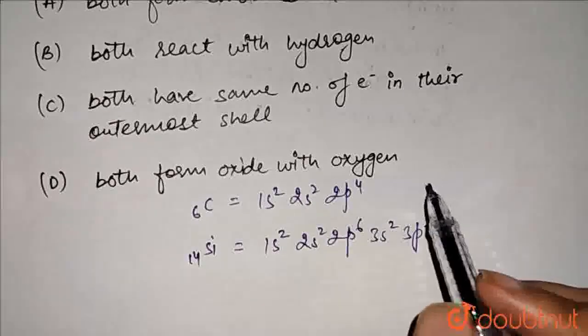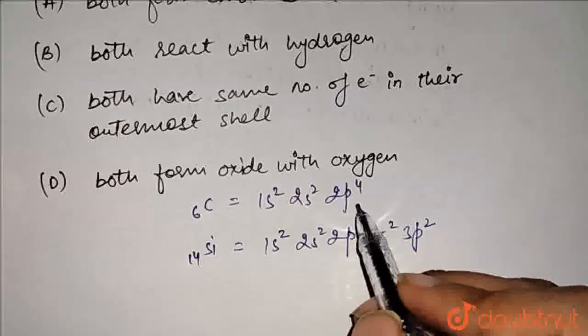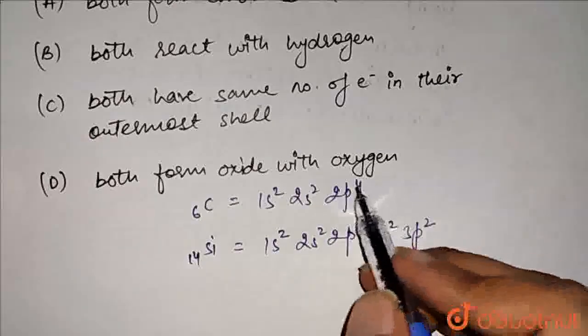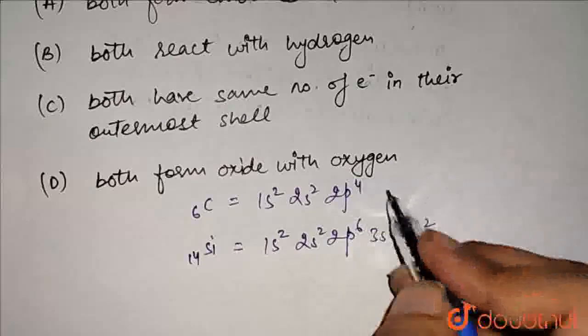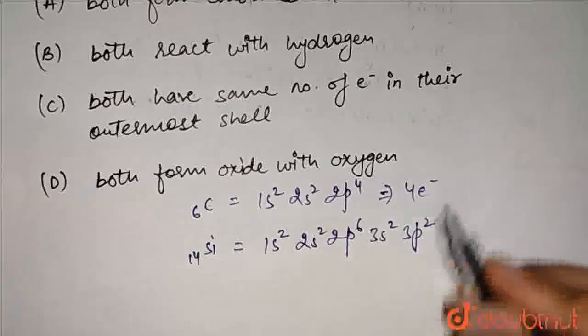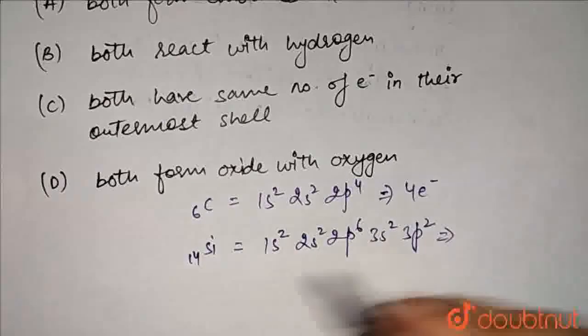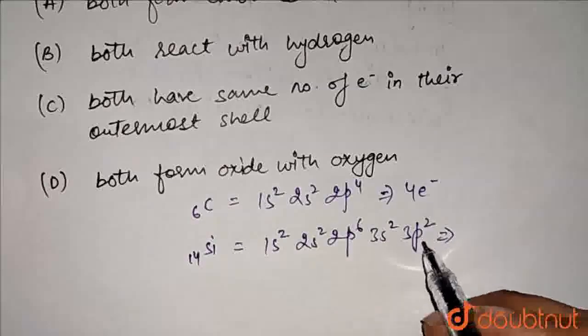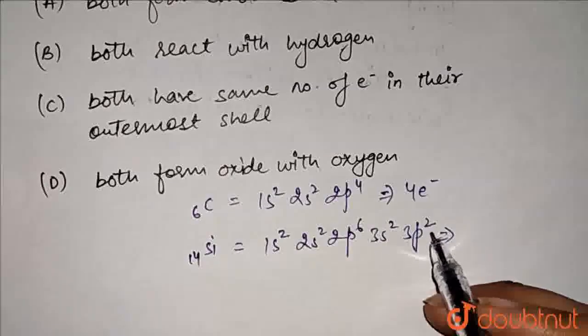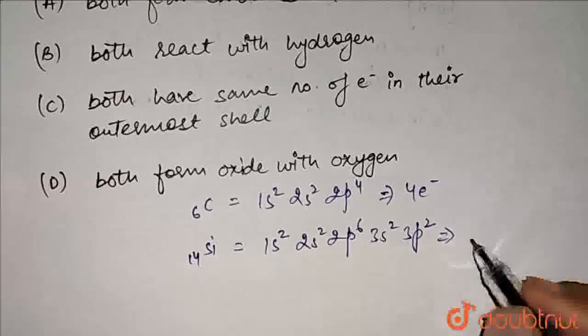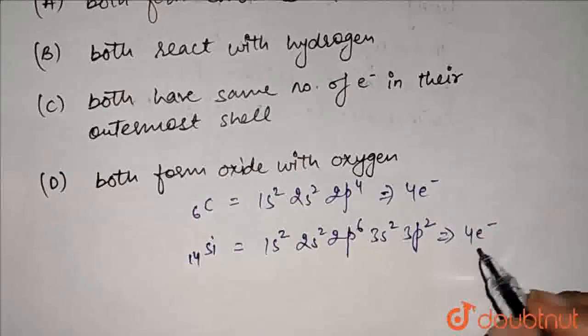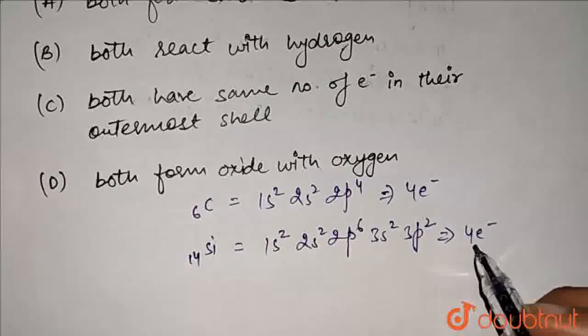So if we look at valence electrons for carbon, it's in the p-orbital. Total 4 electrons. That means, 4 valence electrons in carbon. And if we talk about silicon, then the valence electrons, it's 4 electrons. It's 3s2 and 3p-orbital. So 4 electrons present.